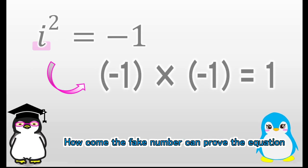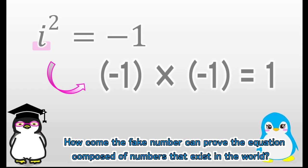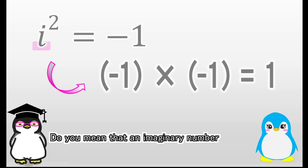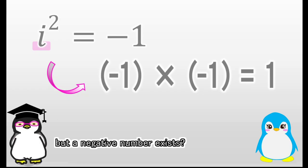Seriously? How come the fake number can prove the equation composed of numbers that exist in the world? Do you mean that an imaginary number doesn't exist in the world? But a negative number exists?